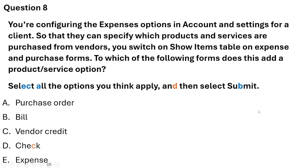Question 8. You are configuring the expense options in Accounts and Settings for a client so that they can specify which products and services are purchased from vendors. You switch on Show Items Table on Expense and Purchase Forms. Which of the following forms does this add a product options tab to? There are five options and the correct answers are Purchase Order, Bill, Vendor Credit, and Expense.